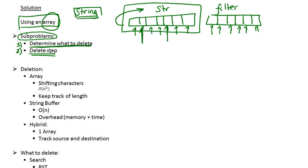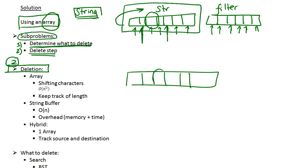We have these two steps and we want to optimize them, make them as efficient as possible. So first, let's examine the deletion step. How are we going to delete a character? Suppose we've already determined that a specific character needs to be deleted. One of the most obvious approaches would be to move all the characters — shift all the characters to its right left by one step. Effectively, this would remove that character, as each subsequent character replaces the one before it.